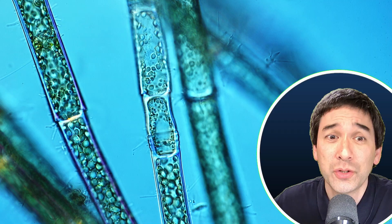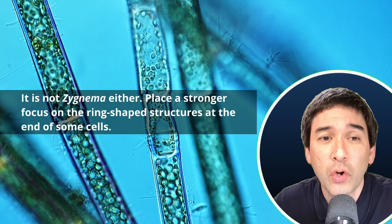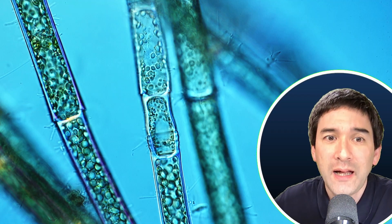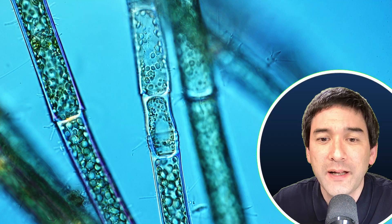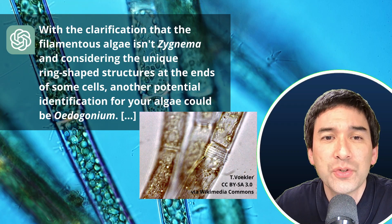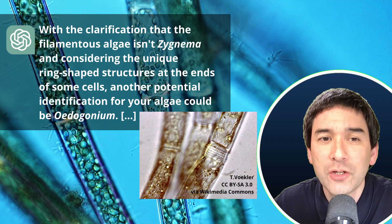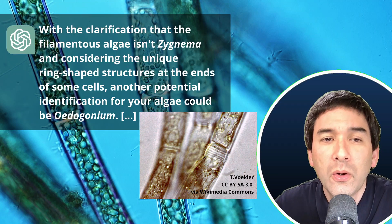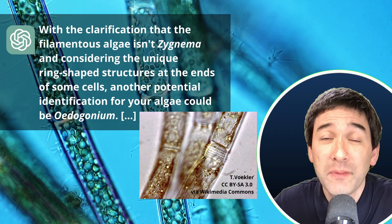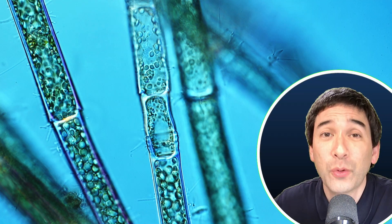So I decided, well, maybe I should really place a stronger emphasis on this. It's not Zagnima either. Place a stronger focus on the ring-shaped structures at the end of some cells. That's what I typed. And then it actually was able to identify it. Look, this is what I got here. With the clarification that this filamentous algae isn't Zagnima and considering the unique ring-shaped structures at the ends of some cells, another potential identification for your algae could be oedogonium. And that is indeed the correct genus. This is also a genus that I found out using my reference book and of course I also found online.